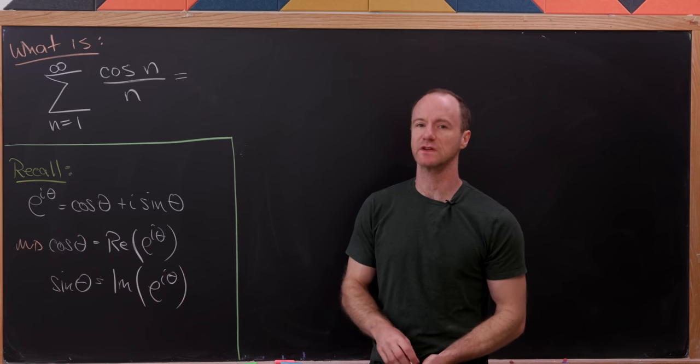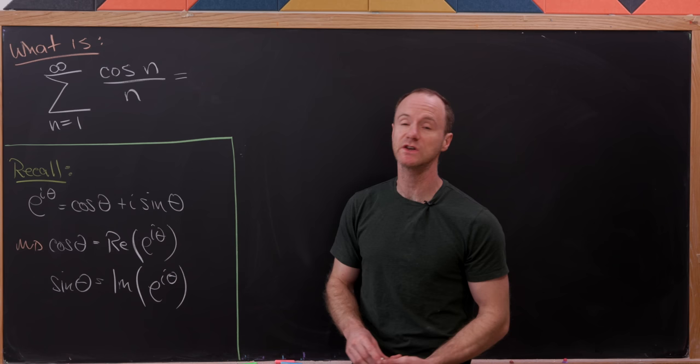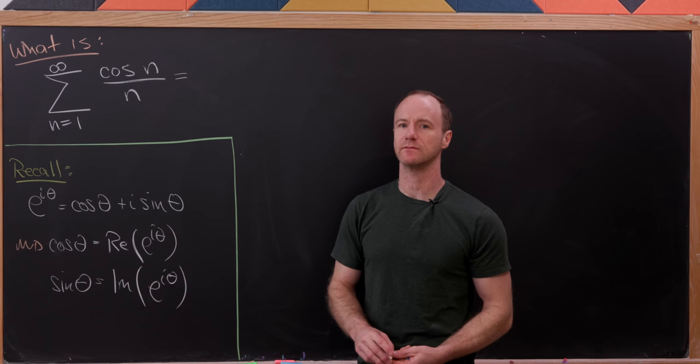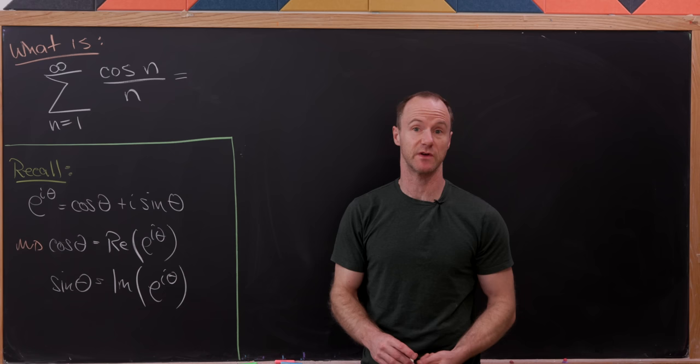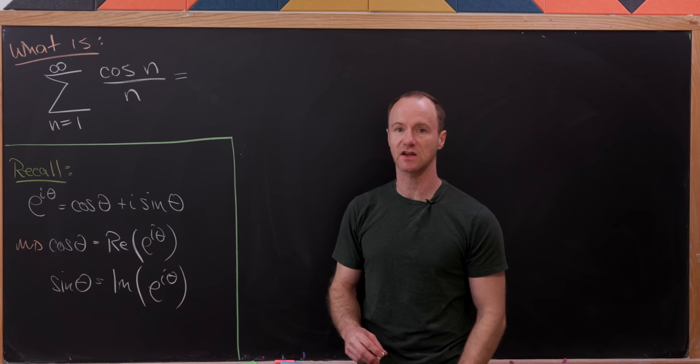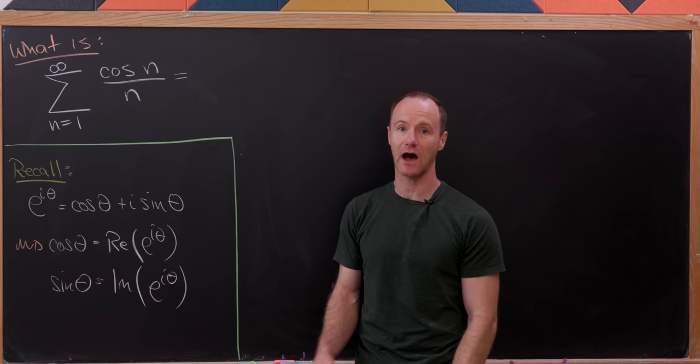Today we're going to look at what I think is a really interesting sum, and that sum is the sum as n goes from one to infinity of cosine of n over n. This has a faint resemblance to the famous harmonic series which diverges — that would be if cosine of n was replaced with one — but this series in fact converges and we'll find its value using some nice tricks moving in and out of complex numbers.